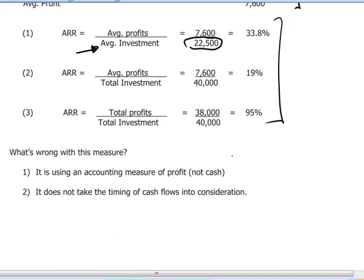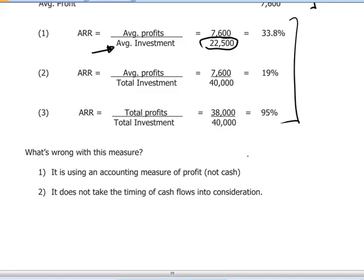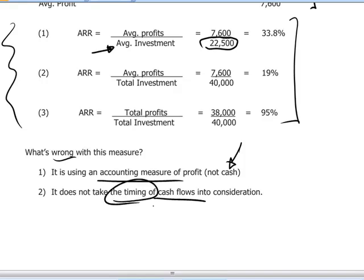Knowing the definitions and being able to calculate them is useful for exam purposes and for understanding what is frequently employed by companies. But since these are accounting measures, we want to appreciate the drawbacks that this type of method presents. We're using accounting measures instead of cash-based measures — that's considered to be a defect in terms of having a clear idea of company performance. The other drawback is that since we're not talking about cash, we're also not taking the timing of cash into consideration.